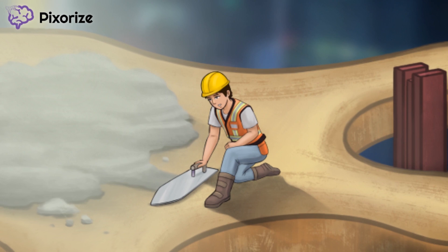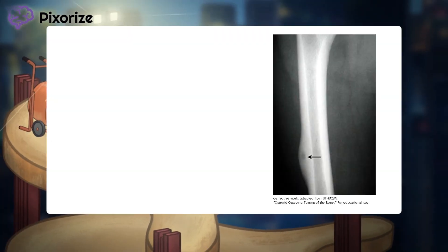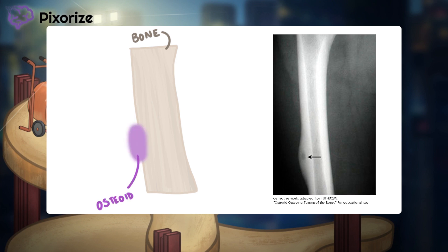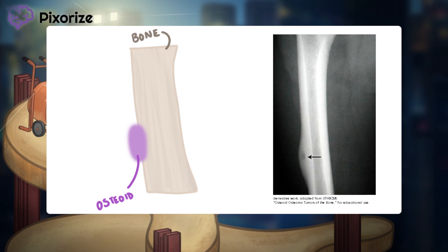Let's briefly touch on imaging. On test day you'll often be given an image of the tumor before making your final diagnosis. Osteoid osteoma and osteoblastoma are tumors of osteoblasts, which produce osteoid that is later mineralized into bone. X-ray beams are blocked by bone but pass right through osteoid, so osteoid appears radiolucent. Since there's more osteoid than the body can mineralize, a nidus of osteoid forms, and reactive sclerosis then occurs, leaving a thin shell of reactive bone. On X-ray, both tumors present as a bony mass with a radiolucent core.